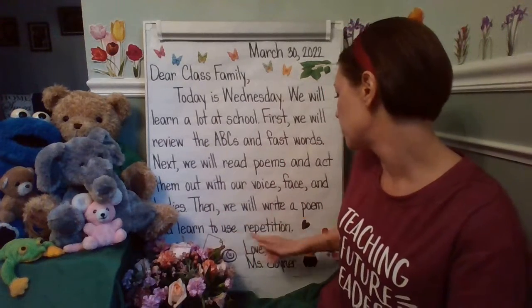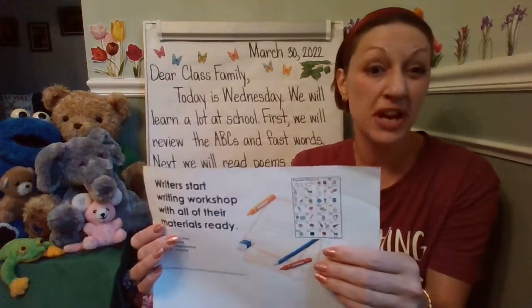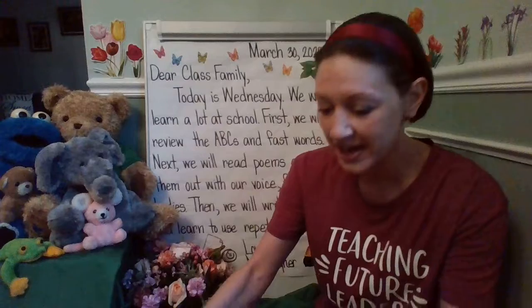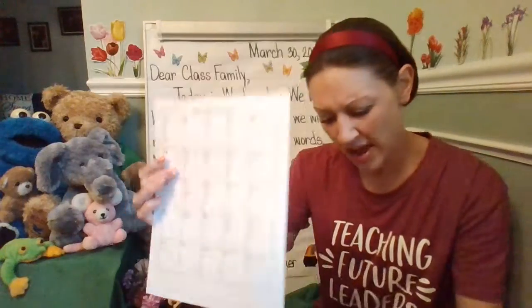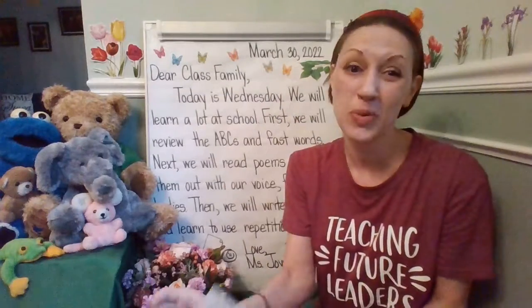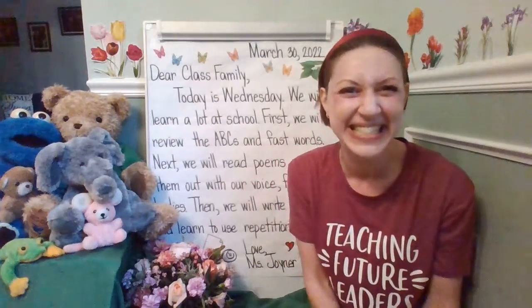Then we'll write a poem and learn to use repetition. During writing workshop, we'll get our resources together including our alphabet chart for each kid and the fast words list on the back. We'll have the word wall up in the classroom to help us, and together we're going to write a poem to learn to use repetition and use resources, because that's what good writers do.